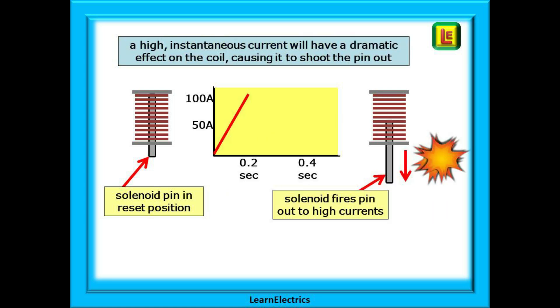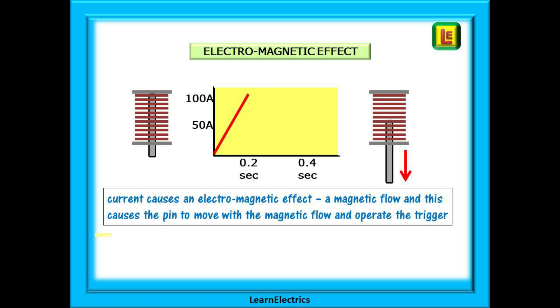But a high instantaneous current change will have a dramatic effect. The pin will be fired out of the MCB. Rapidly changing currents will cause an electromagnetic effect, a magnetic flow that will cause the pin to move very rapidly with the flow and strike the trigger.